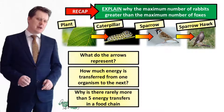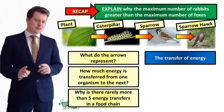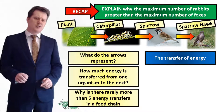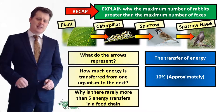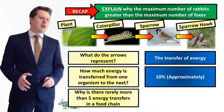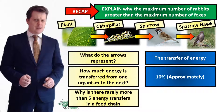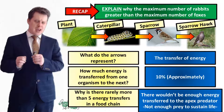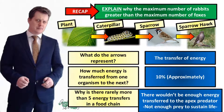These arrows represent the transfer of energy. How much energy is transferred from one organism to the next? About 10%. Why is there rarely more than five energy transfers in a food chain? This is because there wouldn't be enough energy transferred to the apex predator.